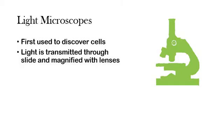Now obviously the first type of microscope that we're going to look at is a light microscope. This is the type of microscope that you probably have in your typical lab setting, of course for biology. And it was actually the first type of microscope to be invented, and it was what was used to discover cells.